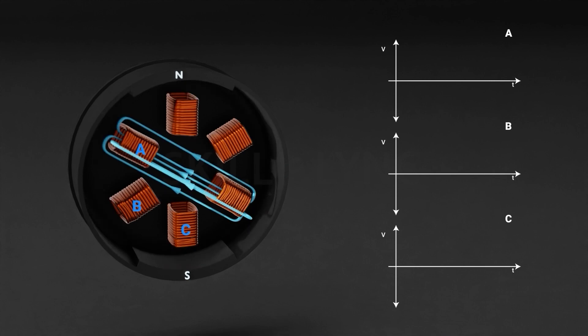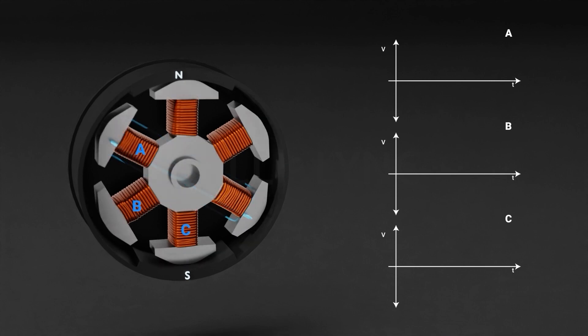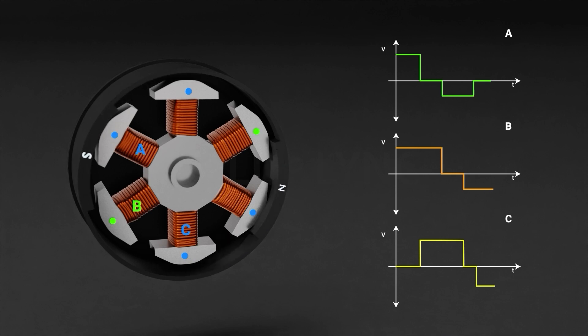But right when the permanent magnet is about to get to coil A, the current to coil A is turned off and coil B is energized. This now makes the opposite pole on the permanent magnet move towards coil B. And just like with coil A, coil B will now get turned off and coil C gets energized. It is this process that repeats itself to keep the motor rotating and turning the wheels of an EV.